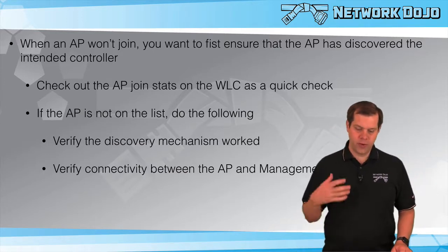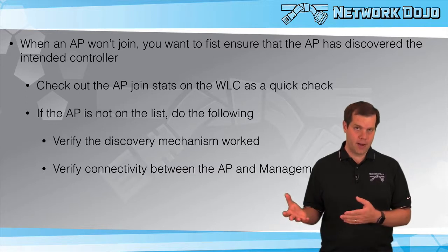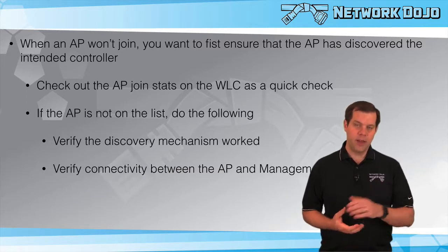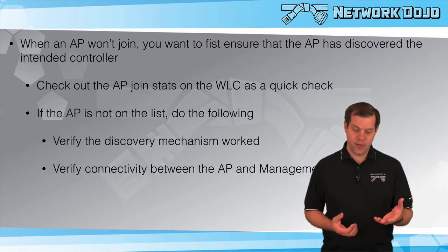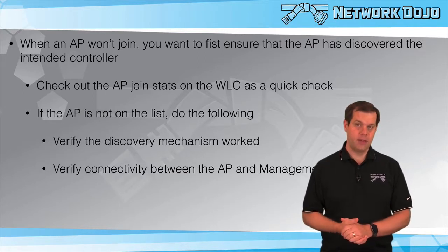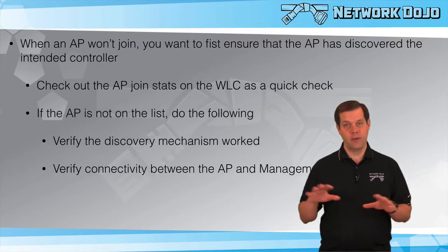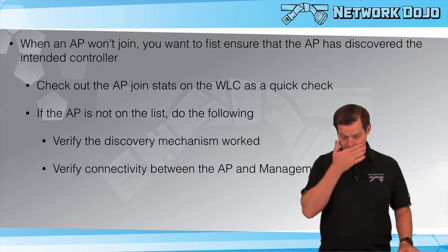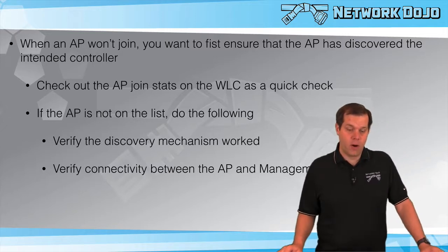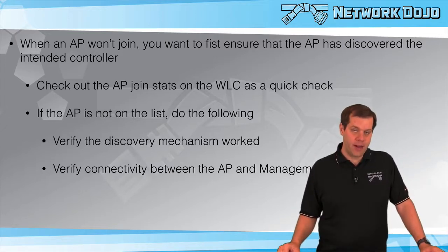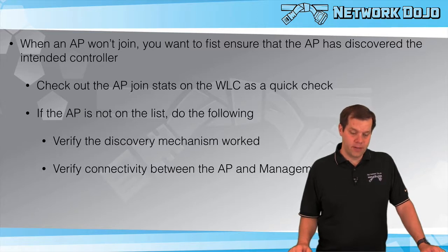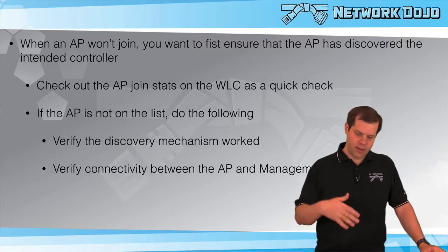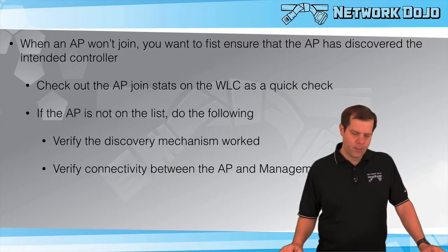Usually one of the things I'll be looking at is AP logs, which often give us very helpful information, as well as the AP join stats on the controller. In the AP join stats, if you don't see your AP on the list, that means the controller has never received a discovery request from that AP. So that's one way to know: has my AP at least gotten a discovery request up to the controller? If the answer is no, we definitely need to troubleshoot the discovery process. But if we do see an entry there, we can click into it and see if the controller sent back a discovery response. If so, discovery should be good, and we would then focus on troubleshooting joins.